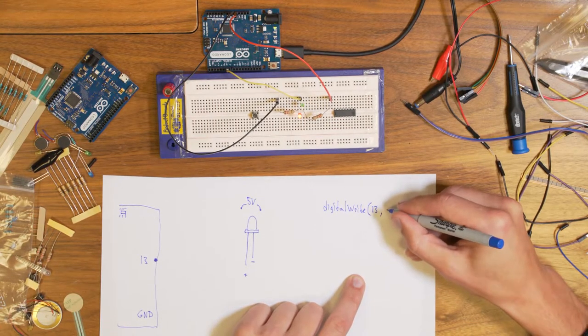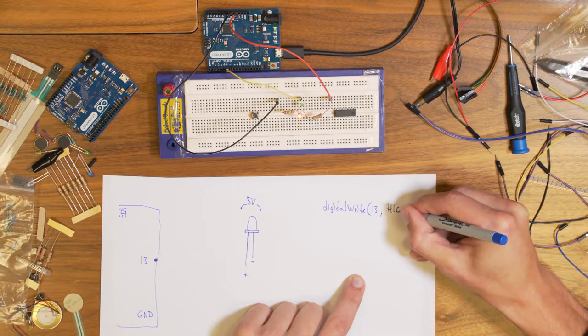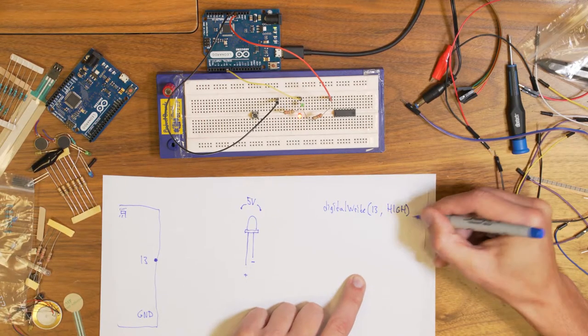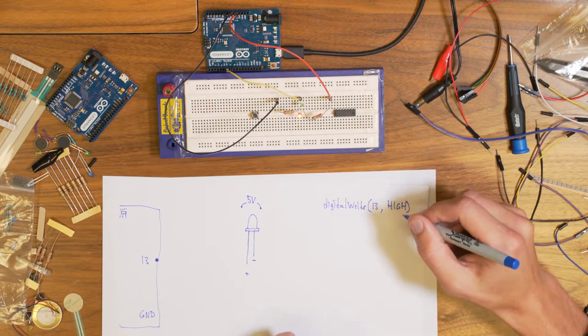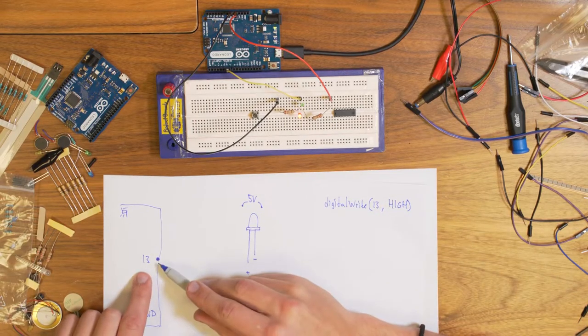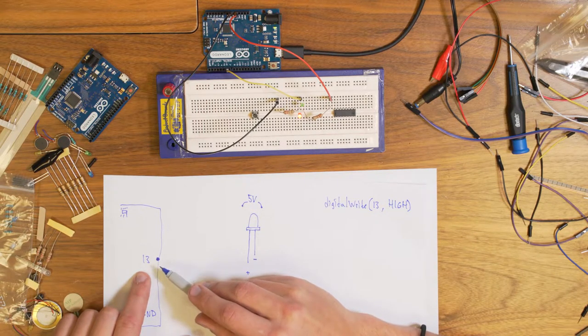And you say high or low. If you write high in big capital letters like this, it will put on a voltage to that pin and it will put out five volts.